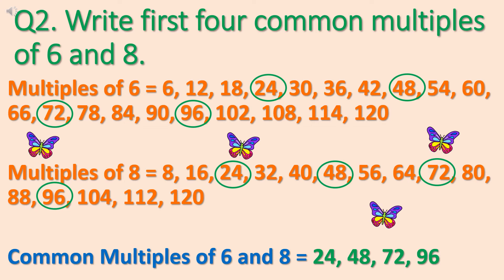First 4 common multiples. So now you can see first common multiple is 24. Next common multiple is 48. Then we have got 72. And fourth one is 96. And we need only first 4 common multiples.